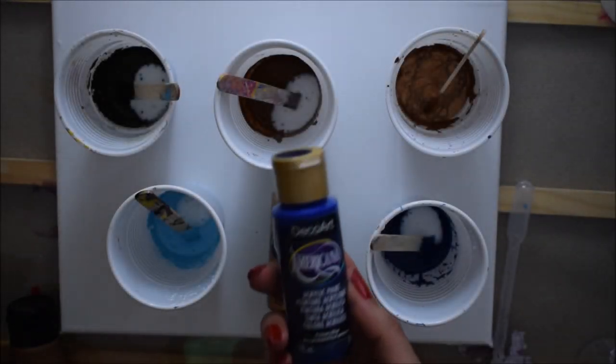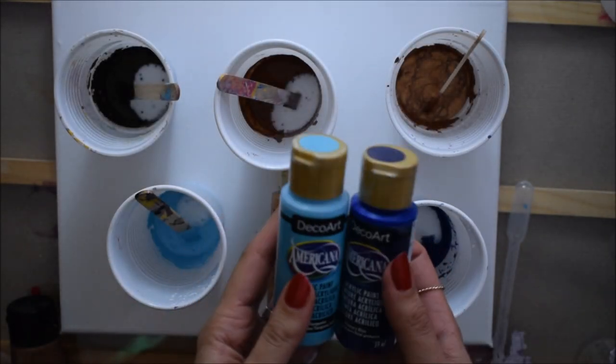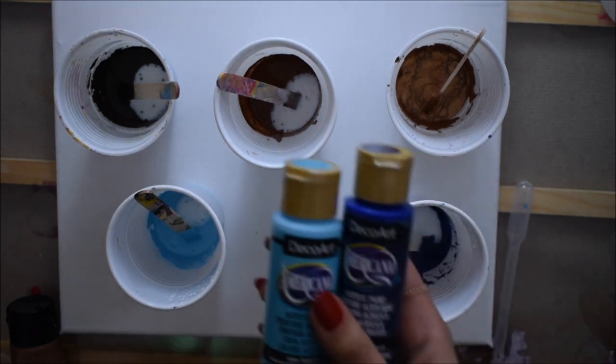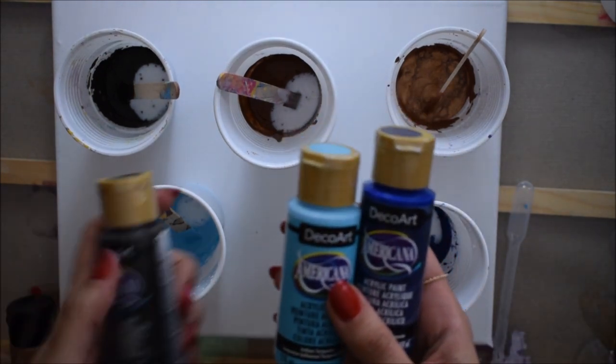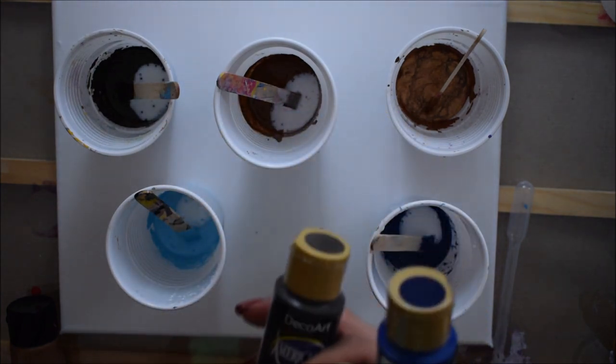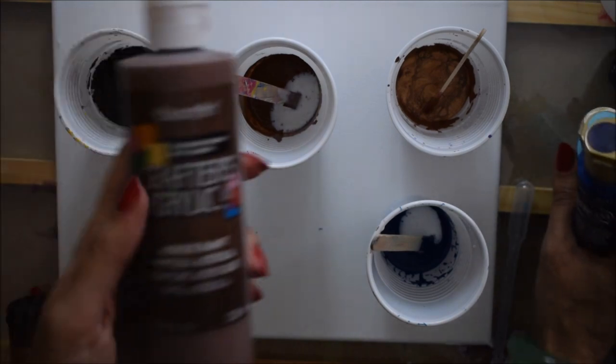Hey guys, welcome back to my channel for another swipe tutorial technique that I'm going to show you. I'm using Americana paints and I'm using five colors: chocolate brown, turquoise, primary blue, and a cinnamon brown as well.